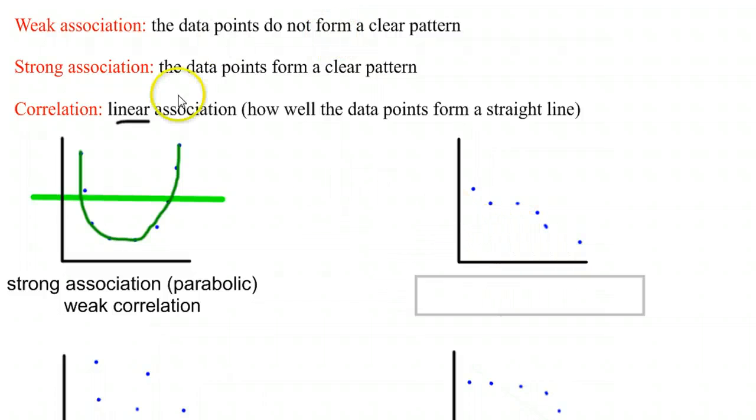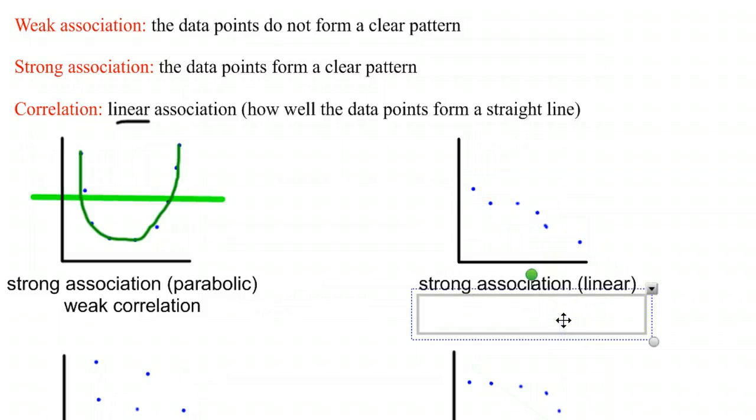In this next one here, we have a very clear pattern, and that clear pattern happens to be a line, so we have strong association and strong correlation.